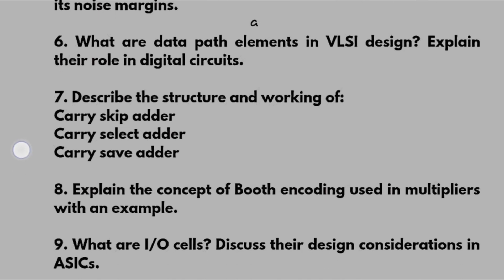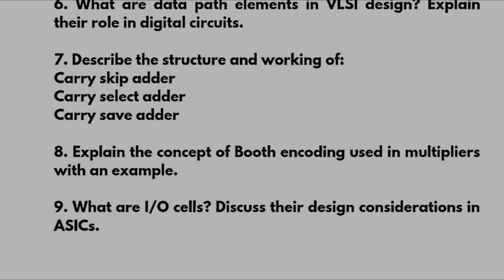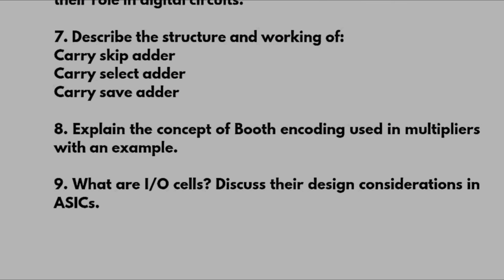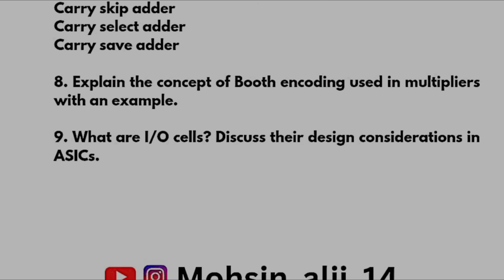Continuing Module 1: What are data path elements in VLSI design and explain their role in digital circuits? Describe the structure and working of carry skip adder, carry select adder, and carry save adder. Explain the concept of booth encoding used in multipliers with an example. What are input and output cells and discuss their design considerations in ASICs?